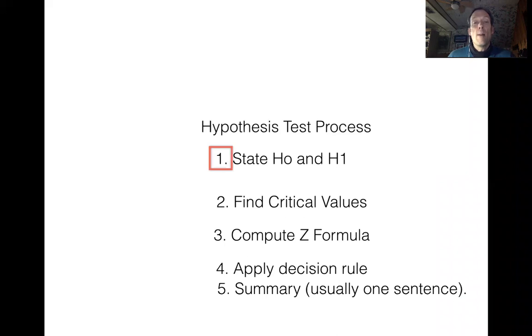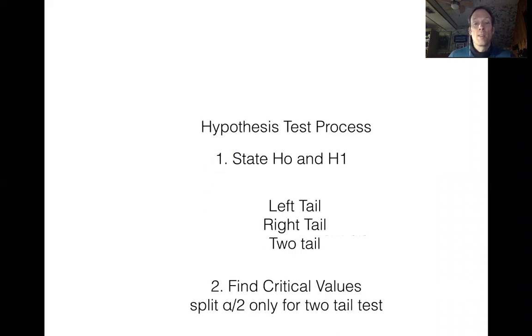We also learned a lot more about stating your HO and your H1 and finding your critical values. In particular, we saw that when we're stating HO and H1, there's three different variations we can have for a hypothesis test: a left-tail test, a right-tail test, and a two-tail test. And then we found out what the context clues are in a question that tell us which variation we're going to do.